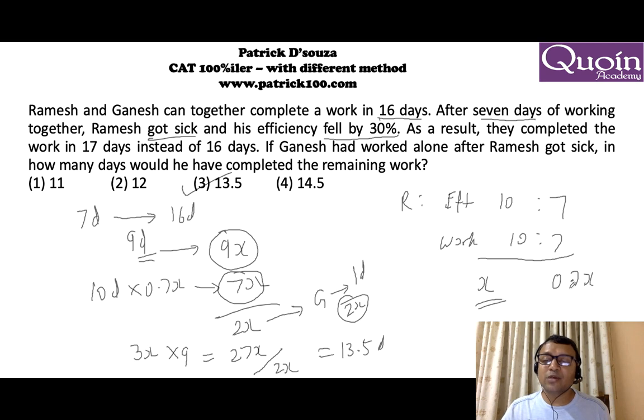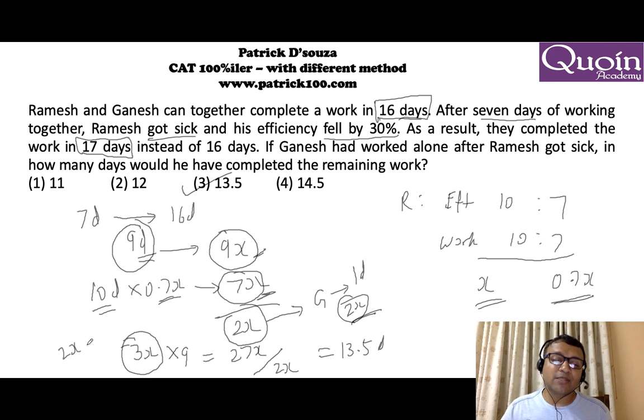Work ratio is 10 to 7. Originally if R used to do x work, now he does 0.7x work. So 9 days of work he did not do, 9x. Instead he worked for 10 days at 0.7x which is 7x. So the rest 2x work was done by Ganesh in 1 day because they worked for 16 days originally. Now Ganesh worked 1 extra day, 17 days. Together they originally did 3x work in 1 day. After he left, 27x work was left which he completed in 13.5 days.